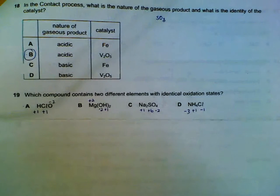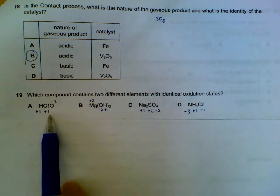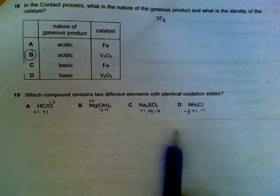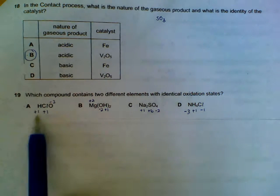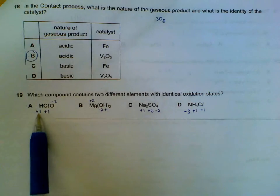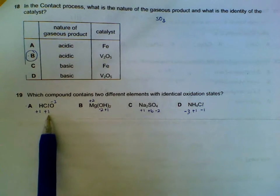Number 19, oxidation states. I've written out all the oxidation states of each individual element in the compounds. The ones with identical oxidation states will be the hydrogen +1 and the chlorine +1 over here.